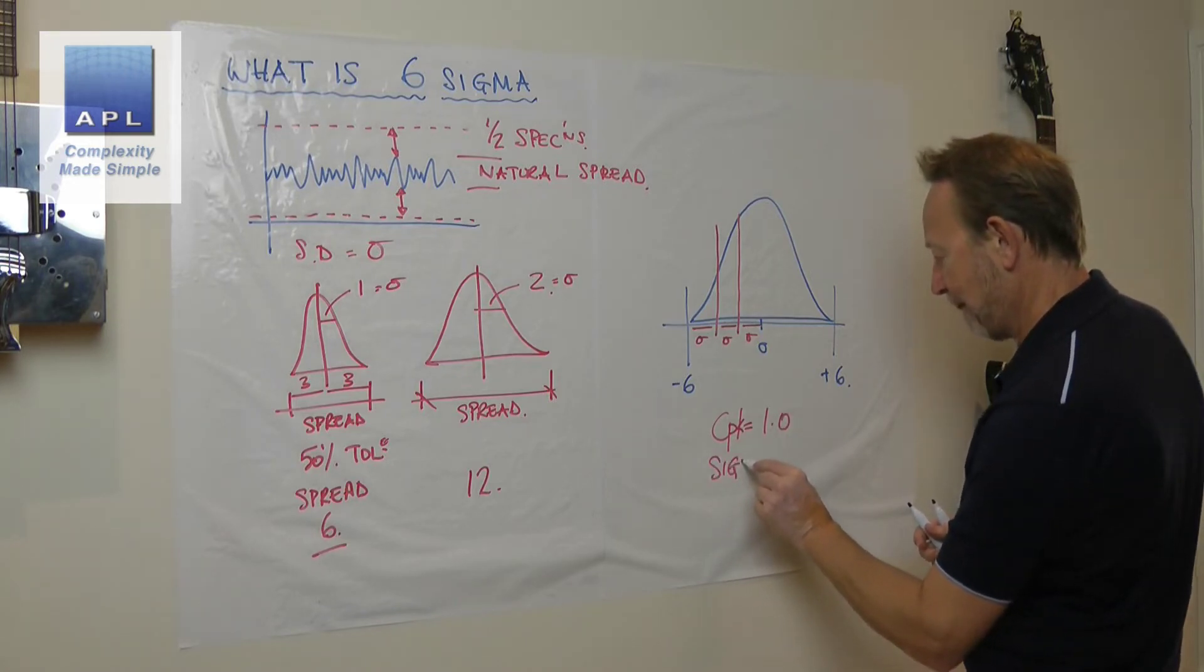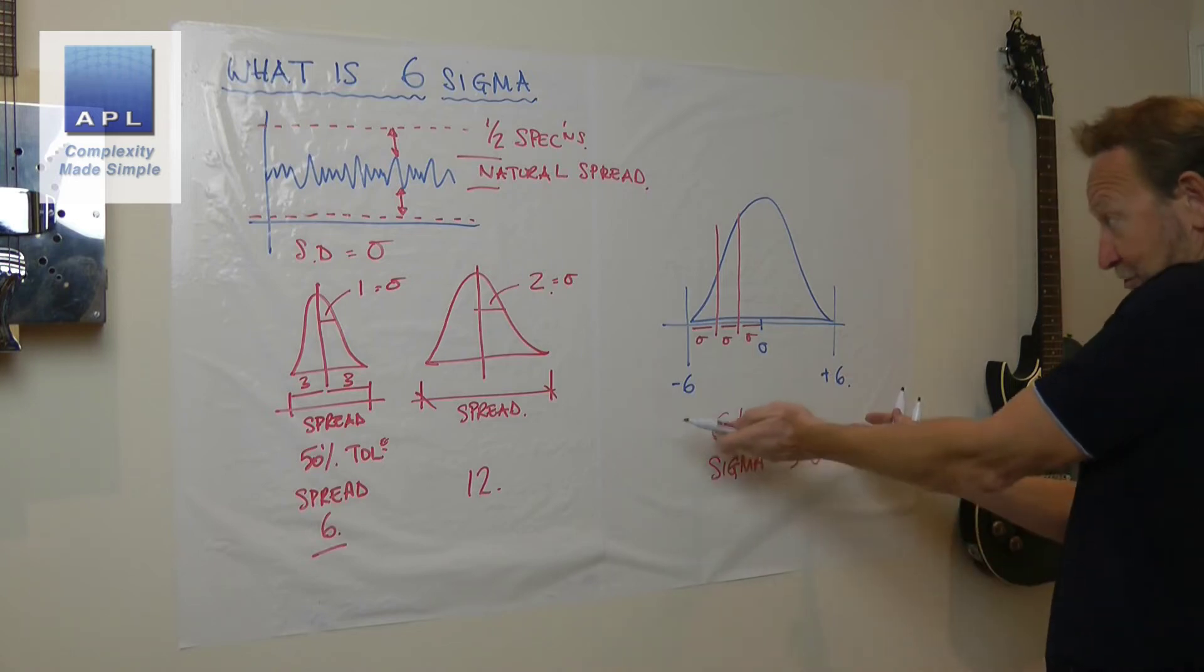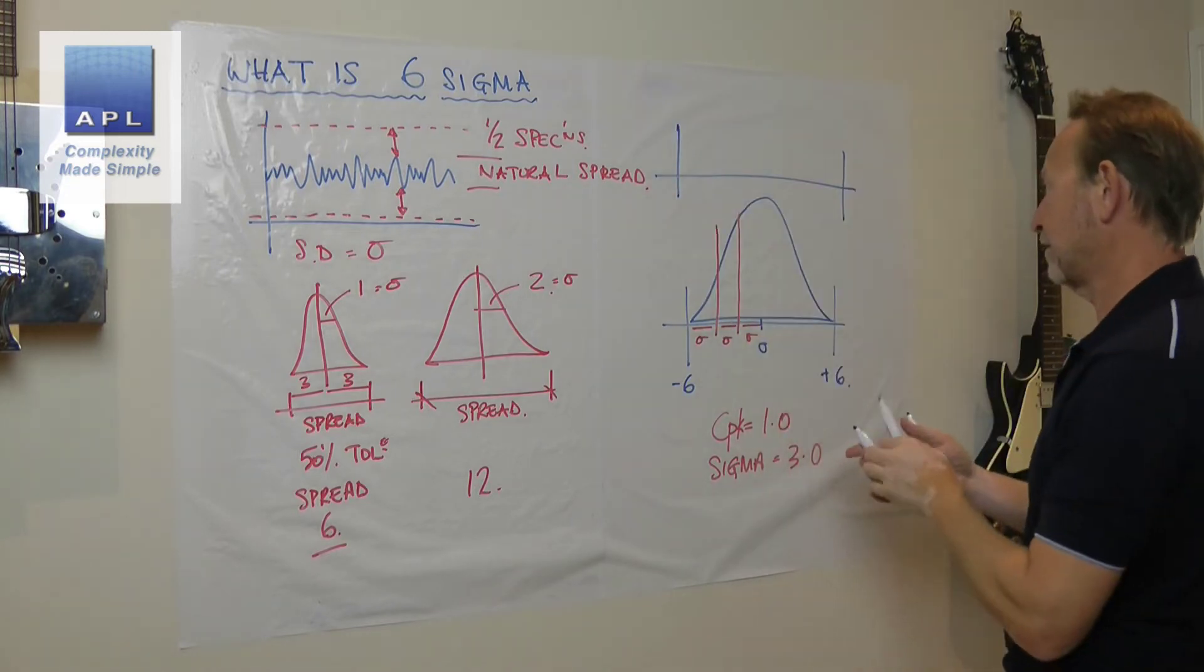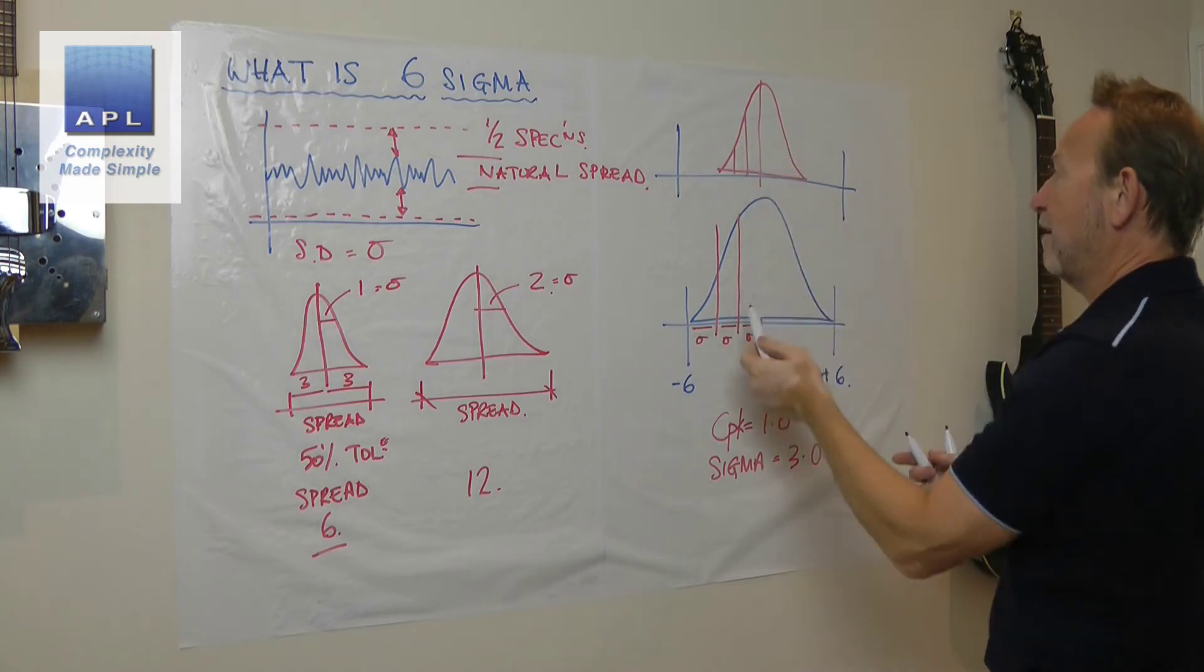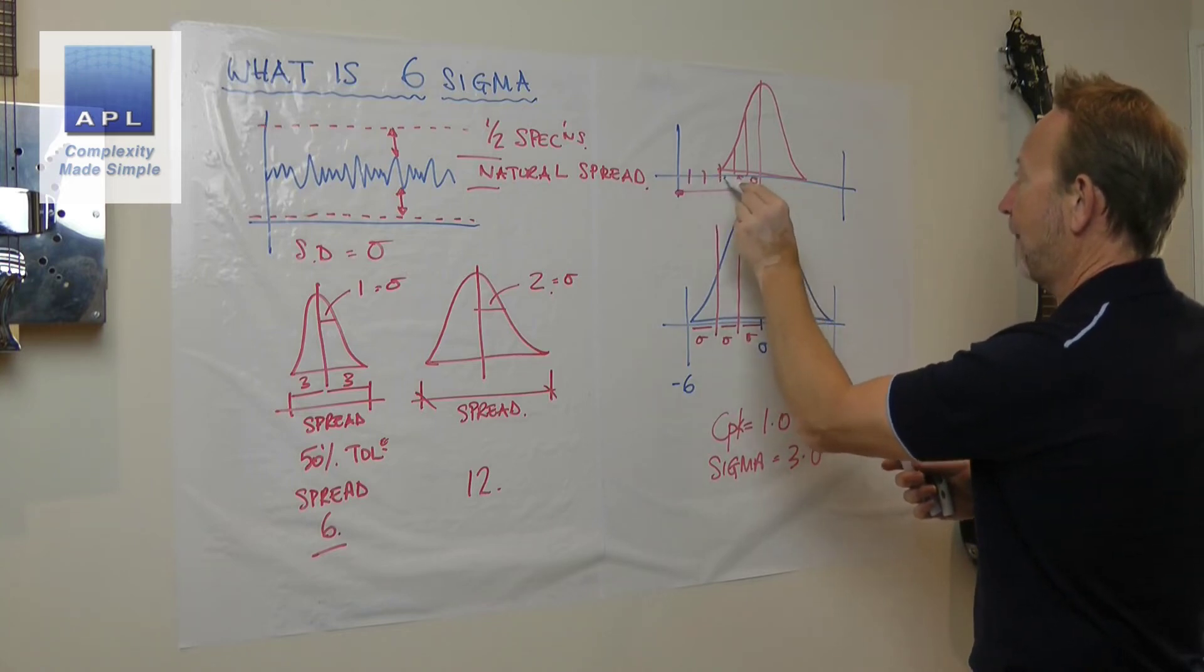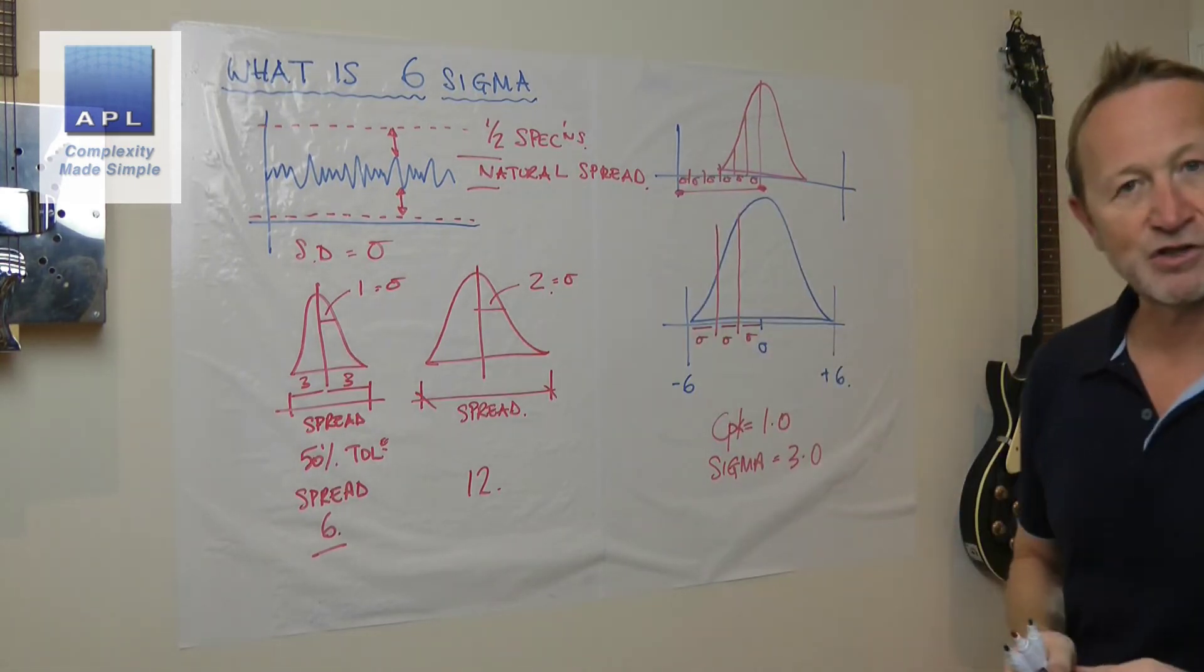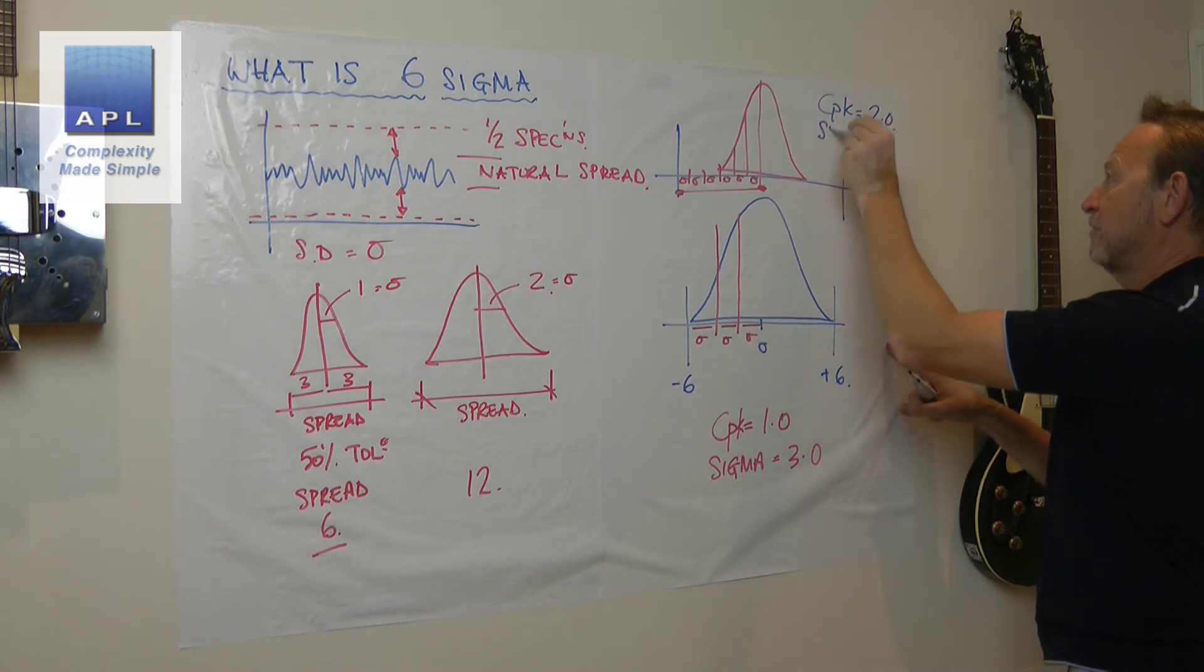We're using this number instead of this number. But if I held this distribution up here, what would I see? Well, of course I've got the same tolerance, I've got half the spread. How many times can I fit Sigma in from here to here? Well, I can get it in six times. So it's a ratio—it's a ratio of how fat the distribution is to how wide the tolerance is. And up here, by the way, the CPK up here equals two and the Sigma level equals six.